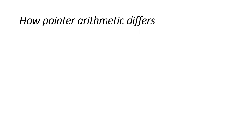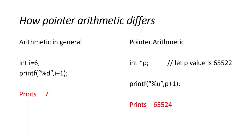So let us see how pointer arithmetic differs. Arithmetic in general: int i=6, printf we can give an expression i+1, so it prints 7. Now pointer arithmetic: int *p, let p value is 65522, printf we give an expression p+1, it prints 65524.